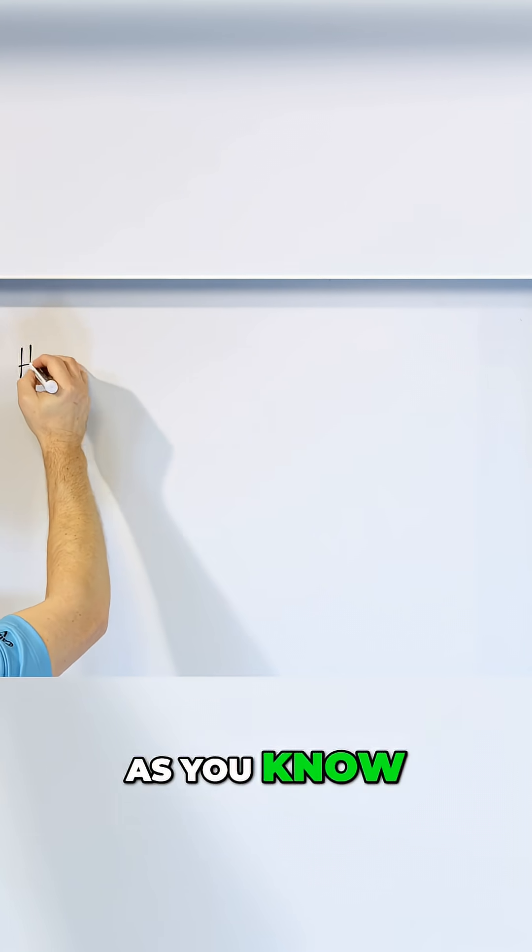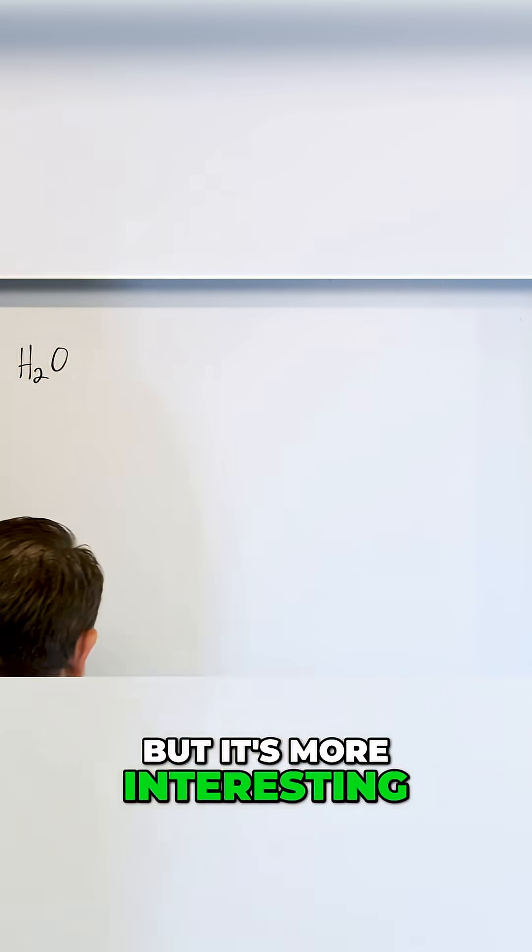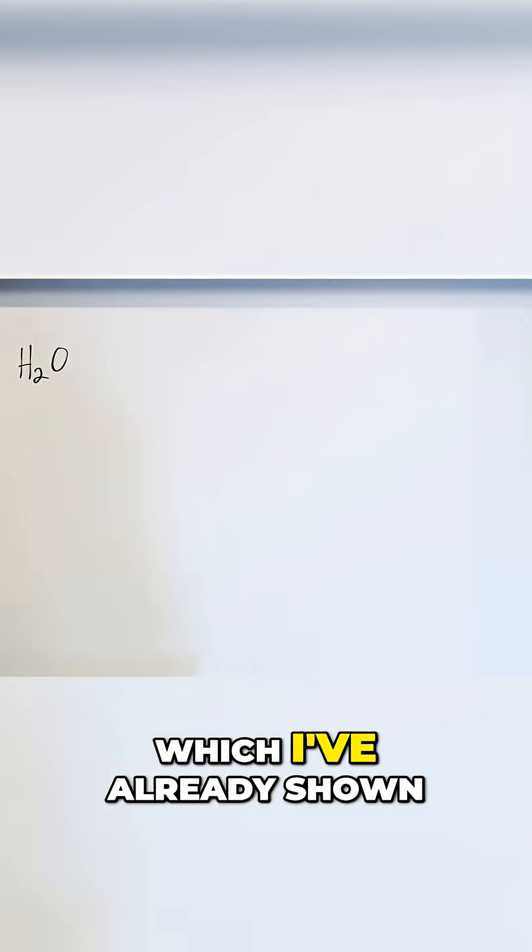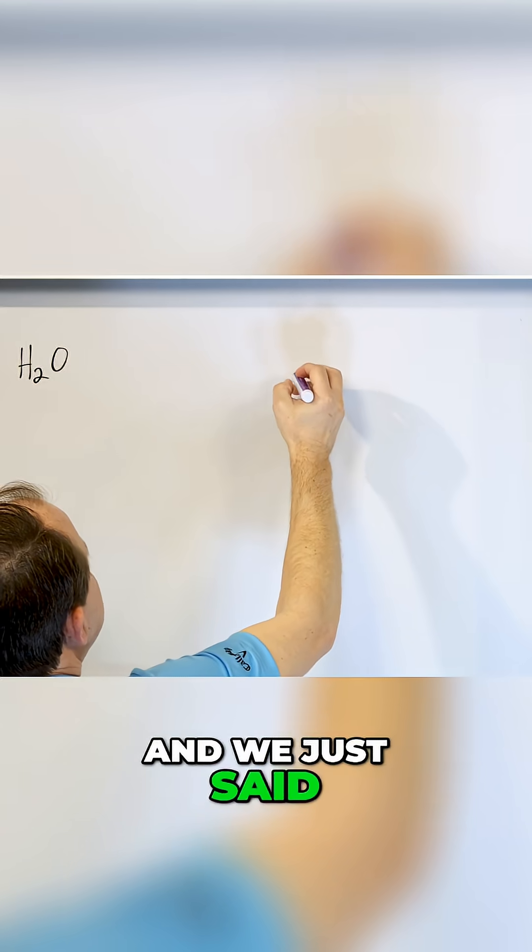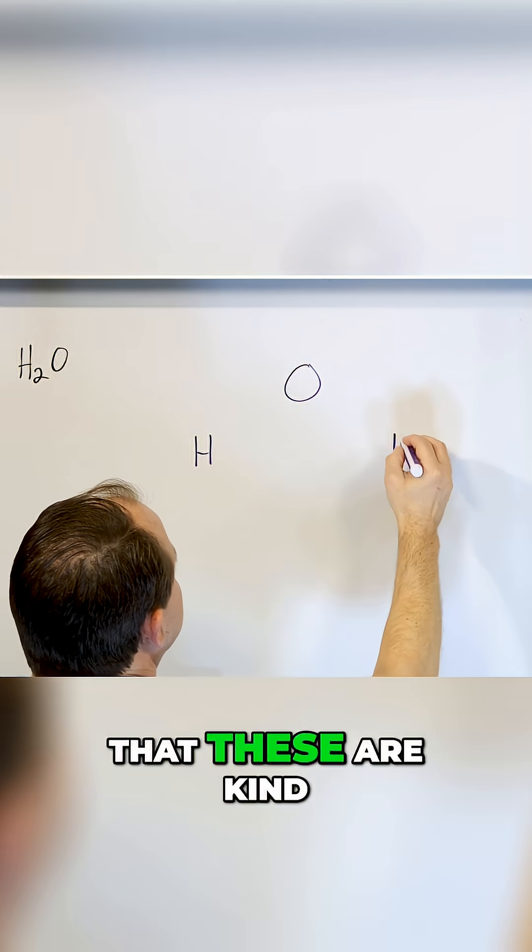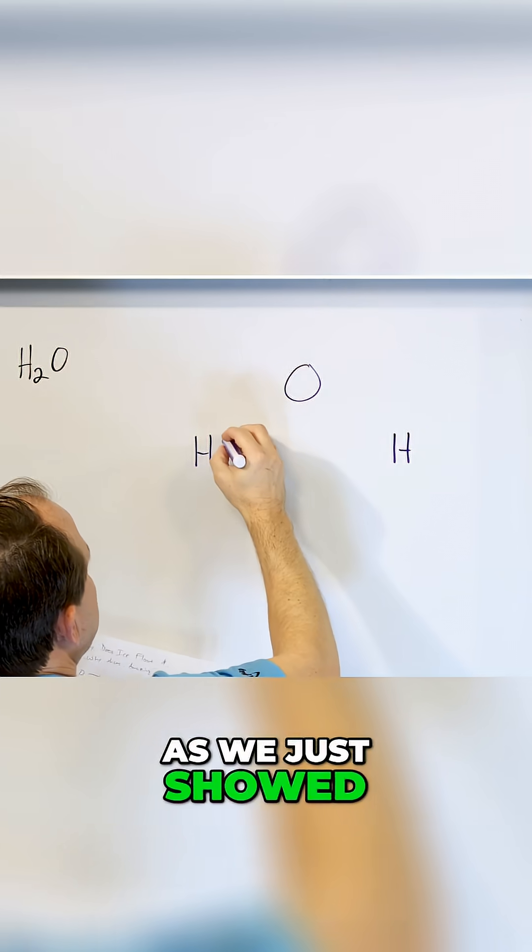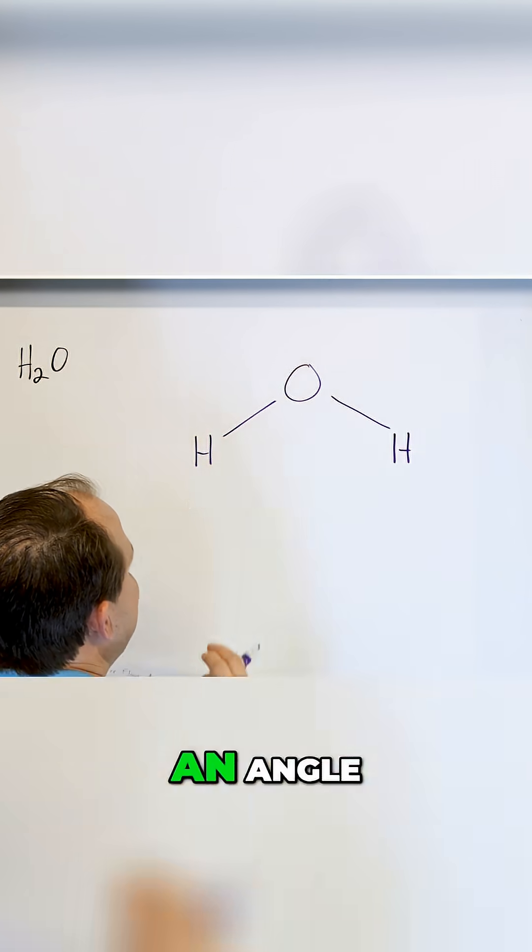So as you know, water is H2O. This is how we typically write it, but it's more interesting to draw the shape of this thing, which I've already shown you here. And we just said that there's an oxygen molecule flanked by two hydrogens, but you might think that these are kind of off straight to the side as a straight molecule, but actually, as we just showed, these are bent at an angle.